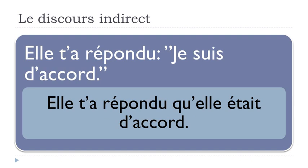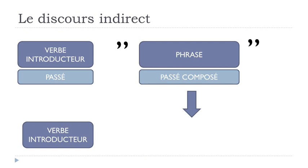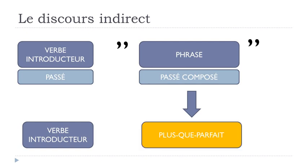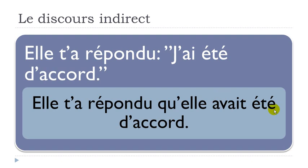This is the way to follow: passé in first part + present in second part → second verb becomes imparfait. Now, if both parts are at the past: elle t'a répondu, j'ai été d'accord. J'ai été is the passé composé. This passé composé form in the second part will become plus-que-parfait. So: elle t'a répondu qu'elle avait été d'accord. The first part stays at passé composé, the second part j'ai été becomes avait été (plus-que-parfait).